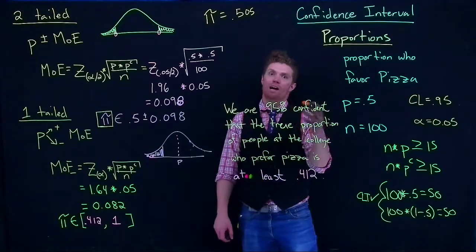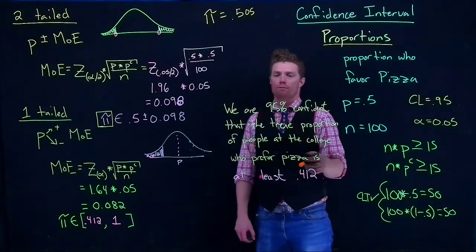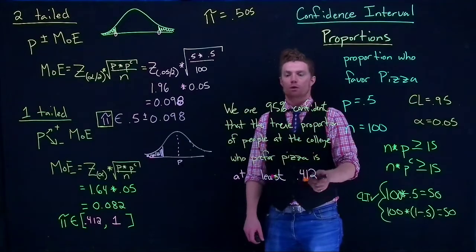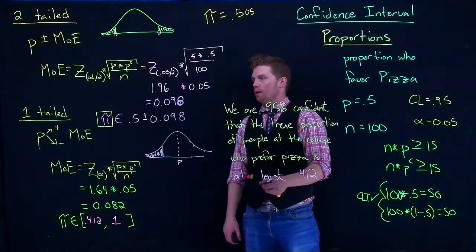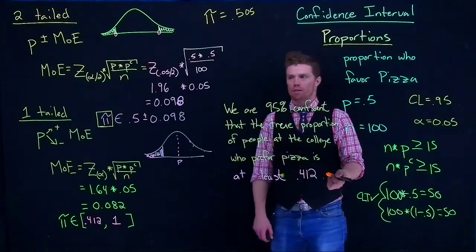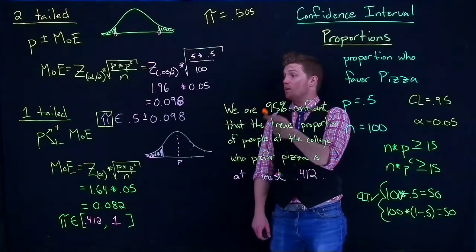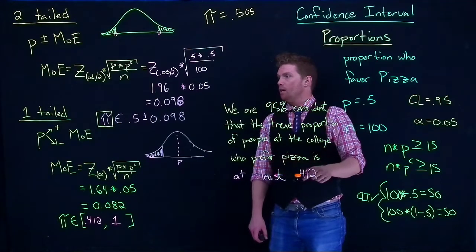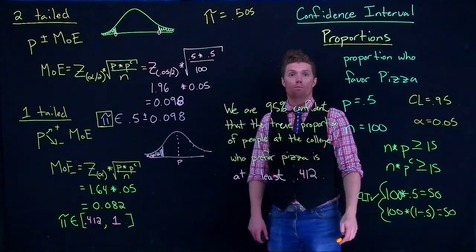Most of the time, we want to be able to make sure that we capture that true proportion, or if we were doing means, we were capturing that true mean. And if we do it like 100 times, roughly 95% of them are going to capture the true parameter, and only alpha, or in this case 5% of the time, we were going to miss it. But that's how we do both one-tailed and two-tailed confidence intervals for proportions. Thank you.